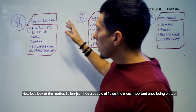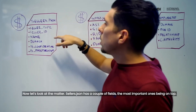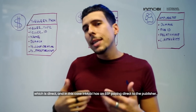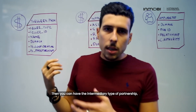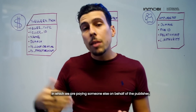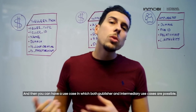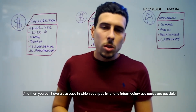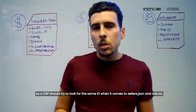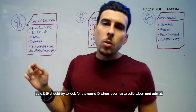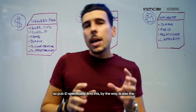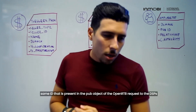Sellers.json has a couple of important fields. First is seller type, which can be one of three types: publisher, meaning direct — InMobi as an SSP is paying directly to the publisher; intermediary, where we are paying someone else on behalf of the publisher, so it's not a direct payment; or both, where both publisher and intermediary use cases are possible. The second field is seller ID, which is the same ID the SSP provides to the publisher in ads.txt. DSPs should look up this same ID in both sellers.json and ads.txt — specifically the PubID, which is also the same ID present in the Pub object of the OpenRTB request.